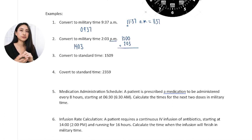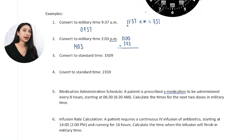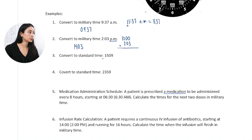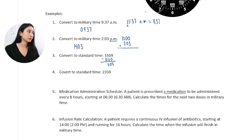Now let's practice converting from military time back to standard time. Let's look at 1509. I know that's military time because I don't see any colons or a.m./p.m. To convert from military time back to standard time, you subtract 1200. Here it's above 1200, so I know this is after noon — after 12 p.m. So I subtract: 1509 minus 1200 gives 309, which is 3:09 p.m.